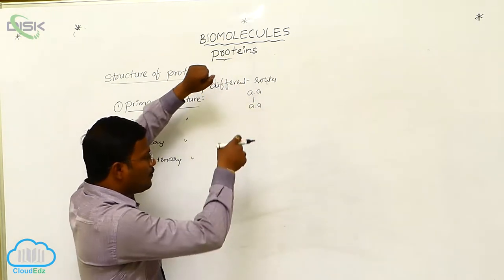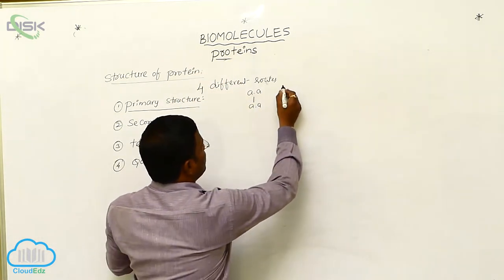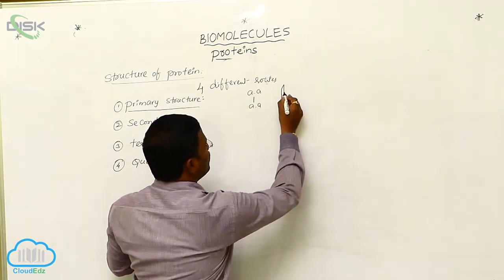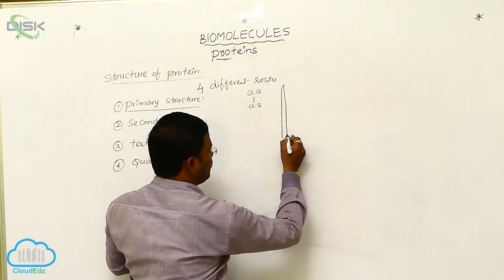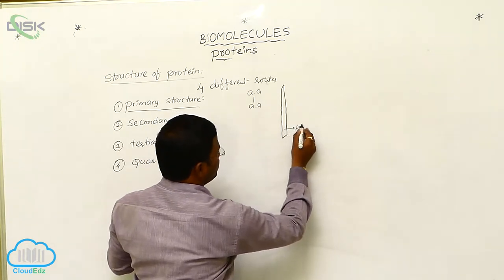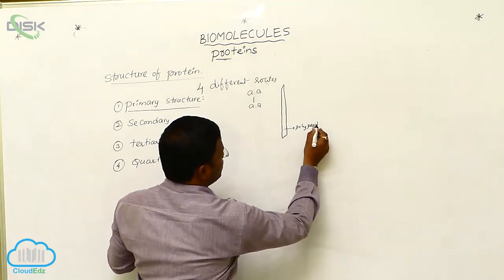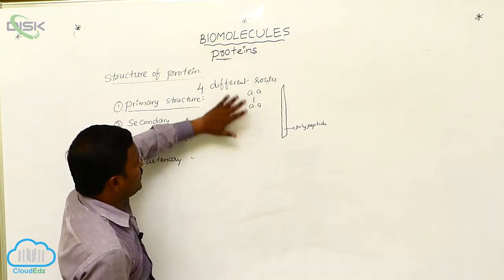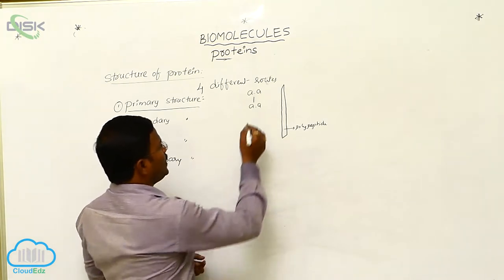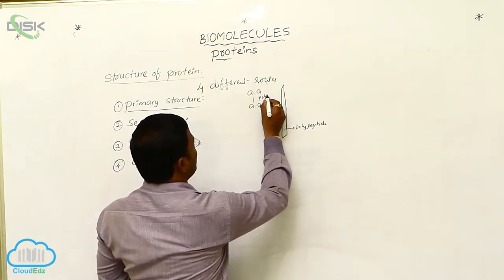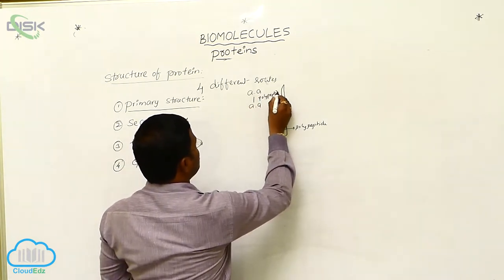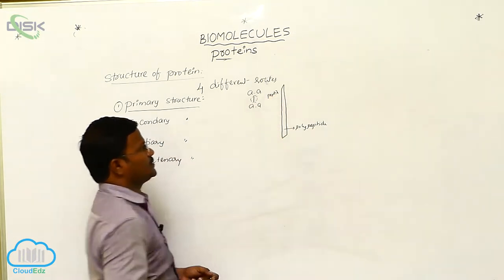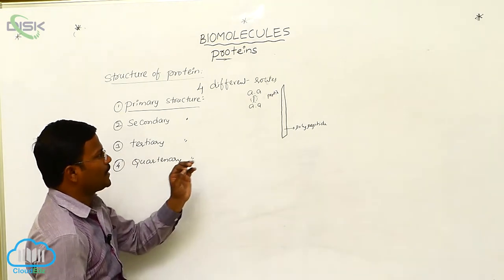The long polypeptide chain appears as a thread-type of structure. In primary structure, between two amino acids, only peptide linkages are present. This peptide bond present between two amino acids is called a peptide linkage or peptide bond.